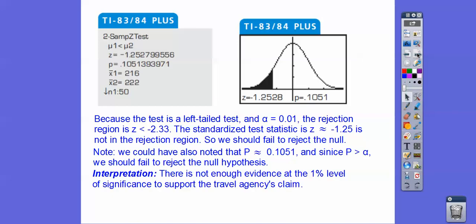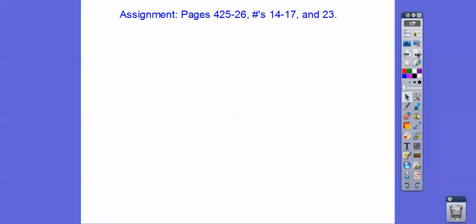So of course we interpret that. There's not enough evidence at the 1% level of significance to support the traveler's agency claim. If you are in my class, you're going to go ahead and plug that in.